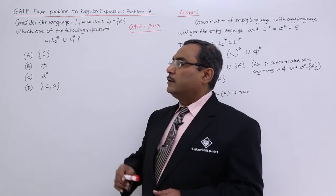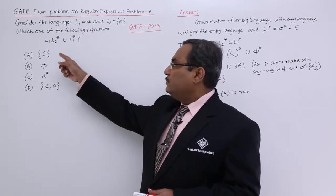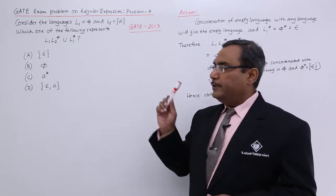If we have L1, L2 star union L1 star, then what does it mean out of these four options? That is the question and we should solve it.